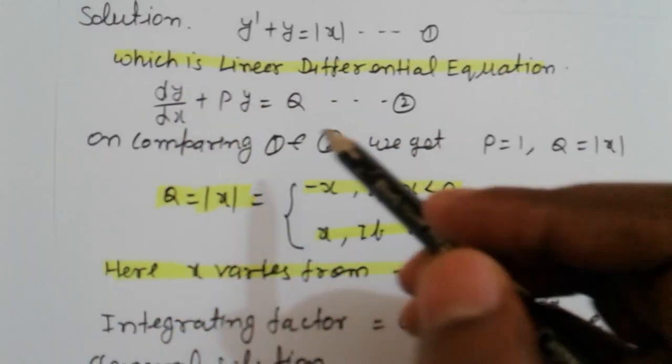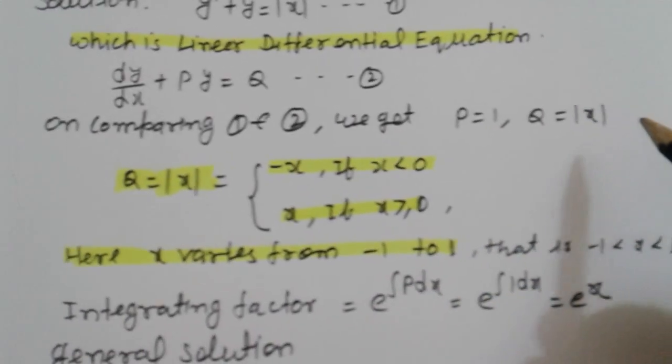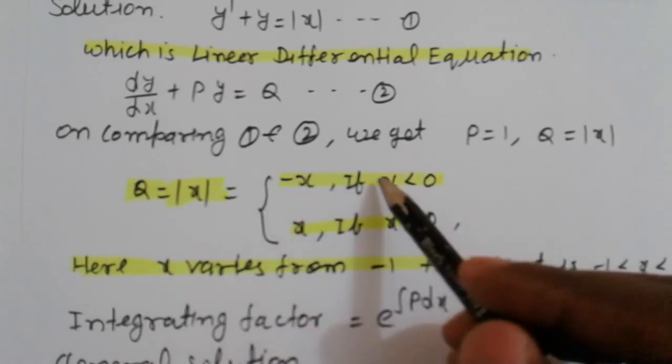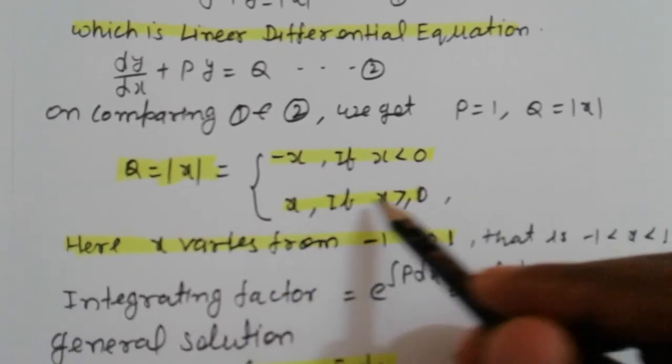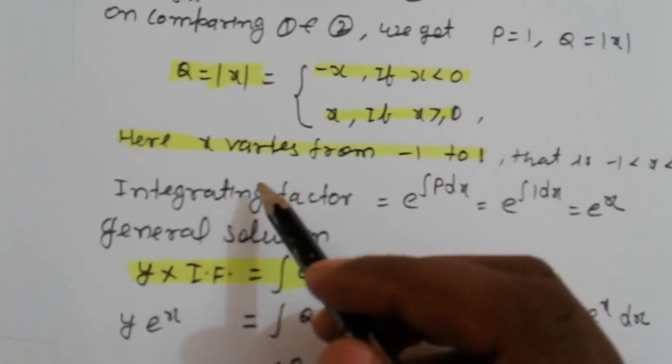On comparing equation 1 and standard form, we get P equals 1, Q equals mod of X. So Q equals mod of X means minus X if X less than 0, and X if X is greater than or equal to 0.